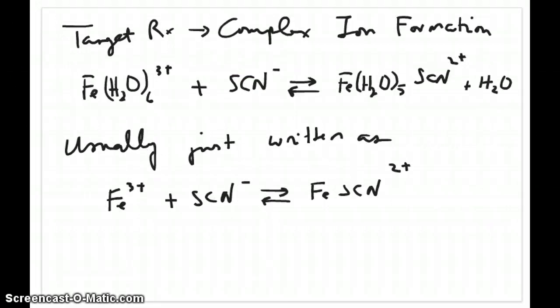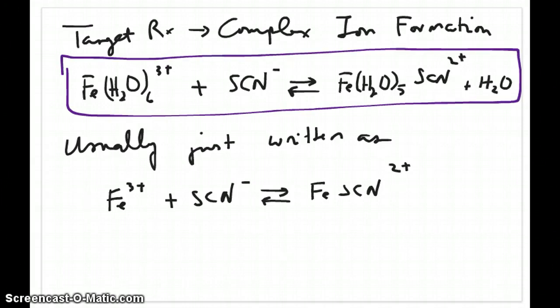What is the target reaction that you're going to be working with? The reaction is written here, which is iron complex with water: Fe³⁺ + SCN⁻ going to FeSCN²⁺ and water. Usually, because water doesn't change the charges on the species, the reaction is just written in a simple form, but the correct form is really the top one.